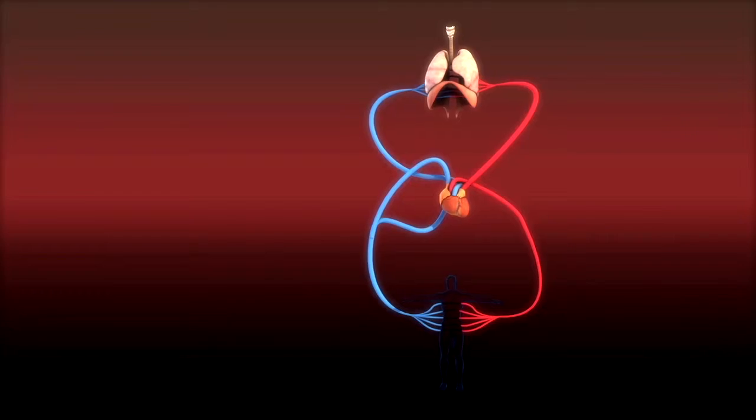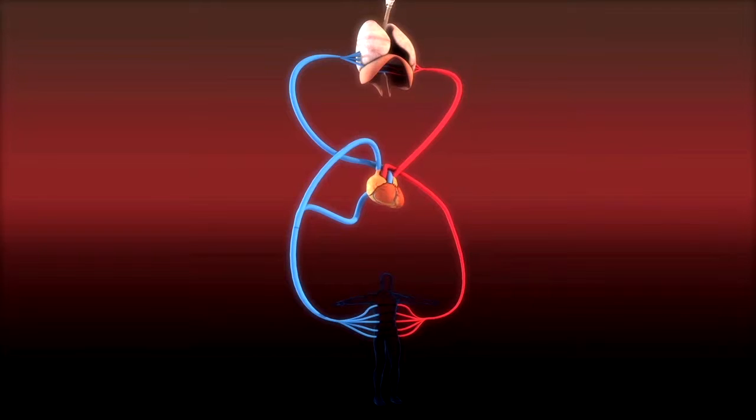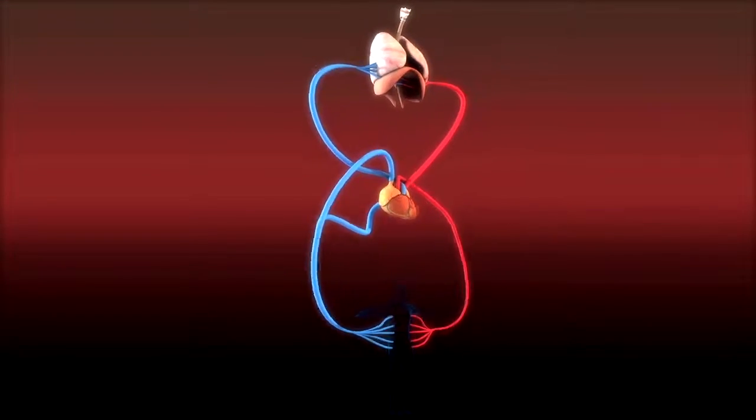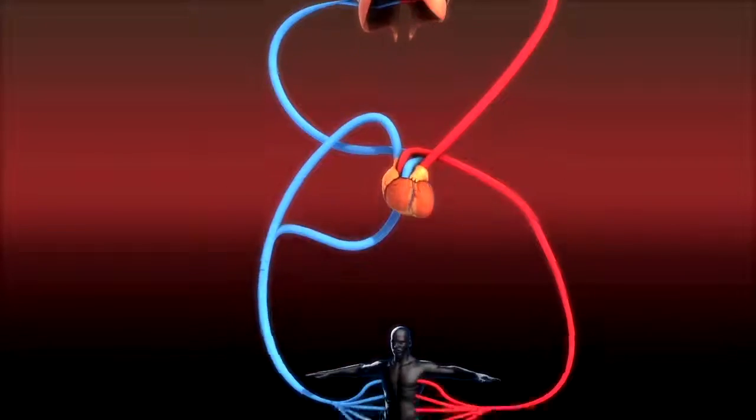There are two blood circulations in the human body which are connected and taking place simultaneously. These are the pulmonary circulation and the systemic circulation.